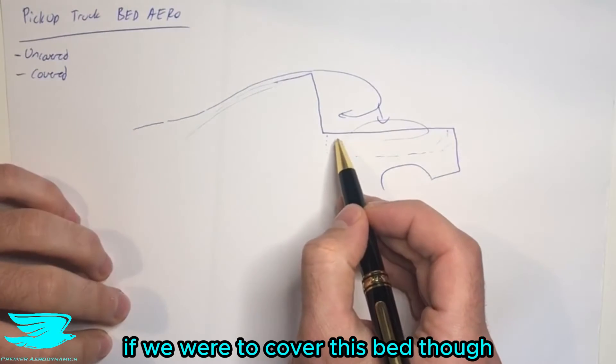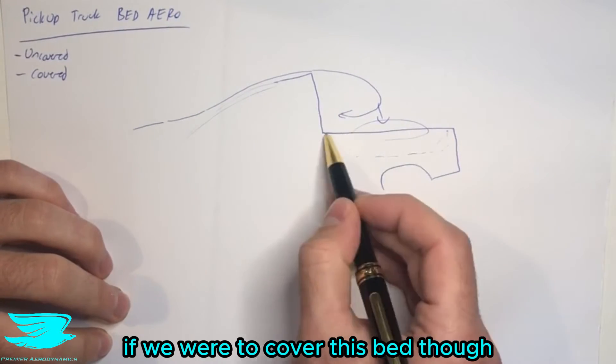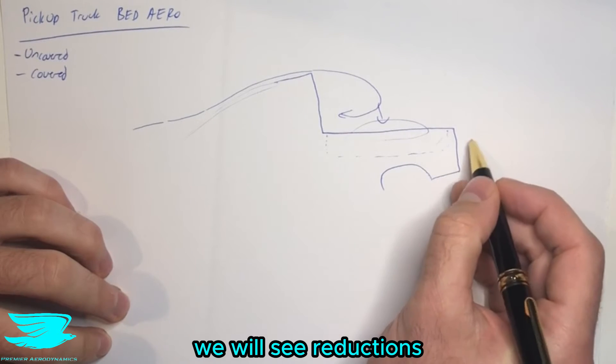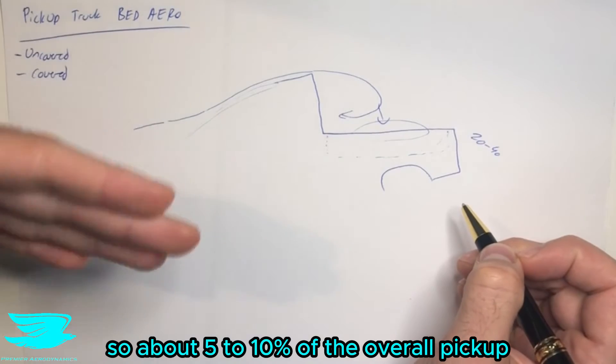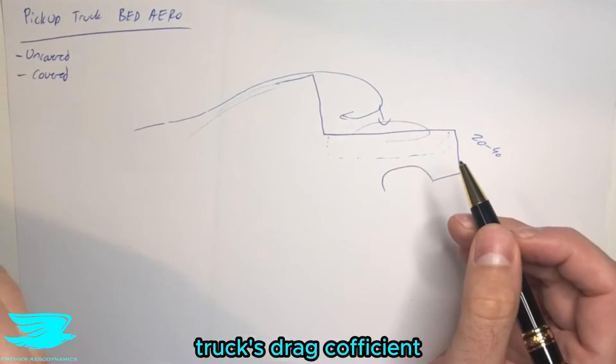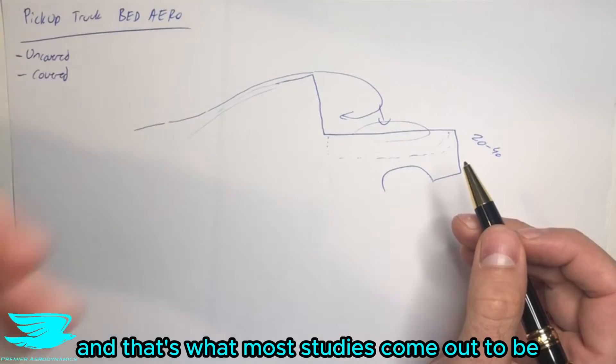If we were to cover this bed, though, we will see reductions of about between 20 and 40 counts. So about 5% to 10% of the overall pickup truck's drag coefficient, and that's what most studies come out to be.